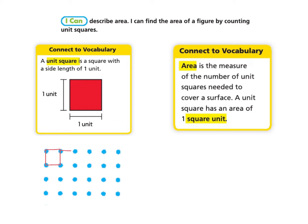Using the blue dots, I am going to draw a one unit square. Then I'm going to draw another one unit square and another. Now I have three unit squares that are connected.